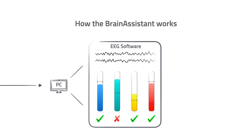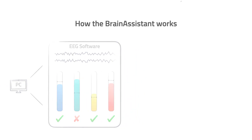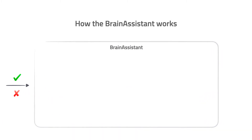You still train with the familiar software, adjusting thresholds as you always did. What gets interesting is the next step: your EEG software automatically creates a reward or no-reward signal when one or multiple conditions in your training protocol are met or not met. Our Brain Assistant can read that data — it knows whether the EEG training protocol is sending a reward or no-reward signal.